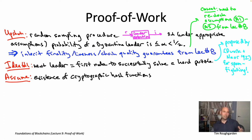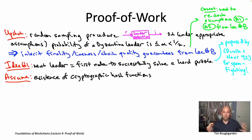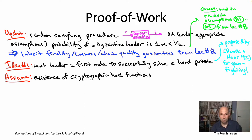A hash function just takes some input from some domain and outputs something from some range. Hash functions show up in algorithms and data structures — for load balancing in hash tables, for example. But here we're talking about cryptographic hash functions, where the goal is to be completely inscrutable. Whatever you throw into the hash function, it gives back unintelligible gibberish you've never seen before. A canonical example is SHA-256 — SHA stands for Secure Hash Algorithm, and 256 refers to the number of bits in the output.